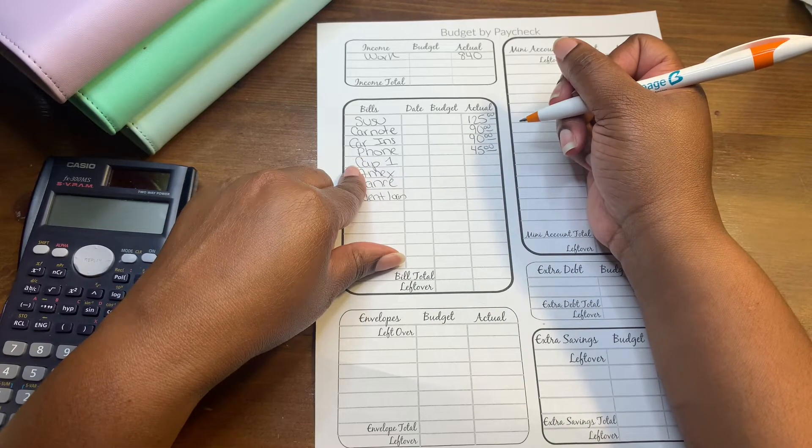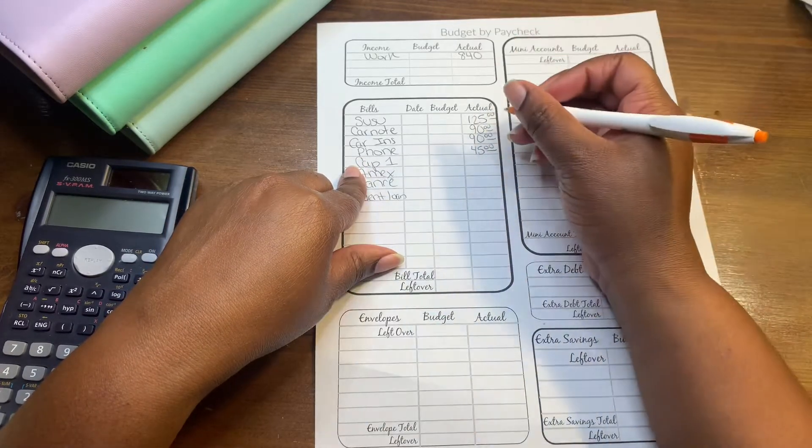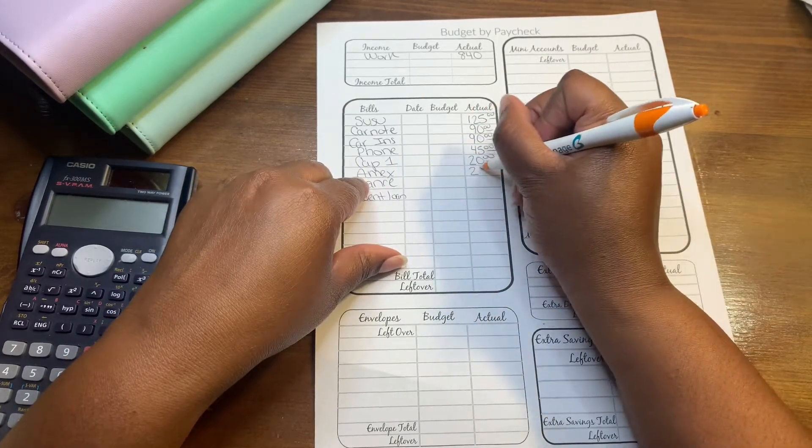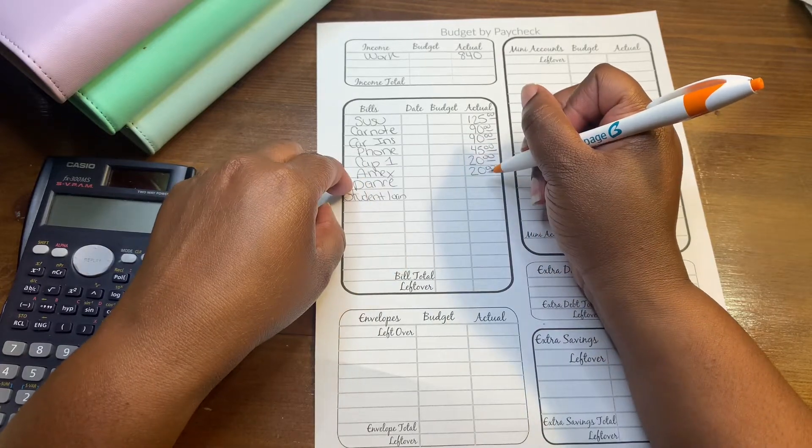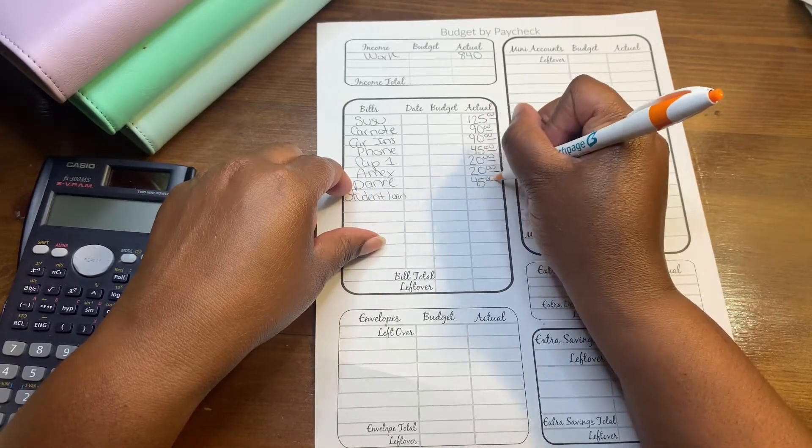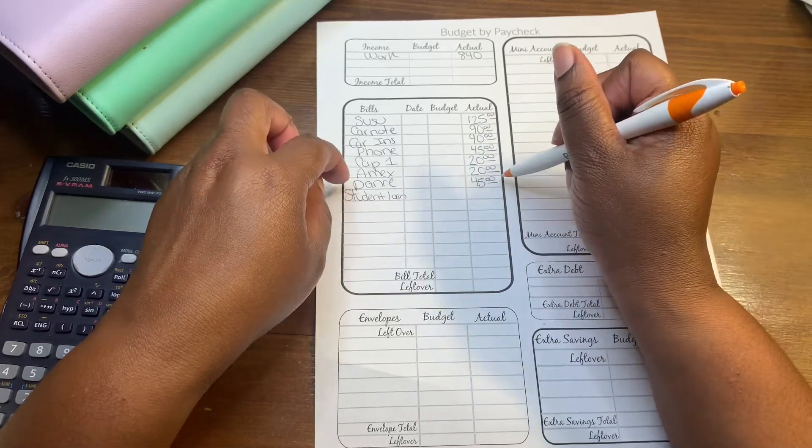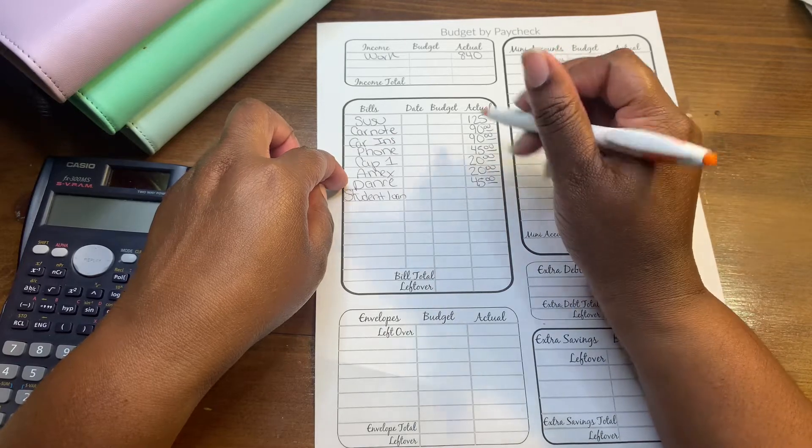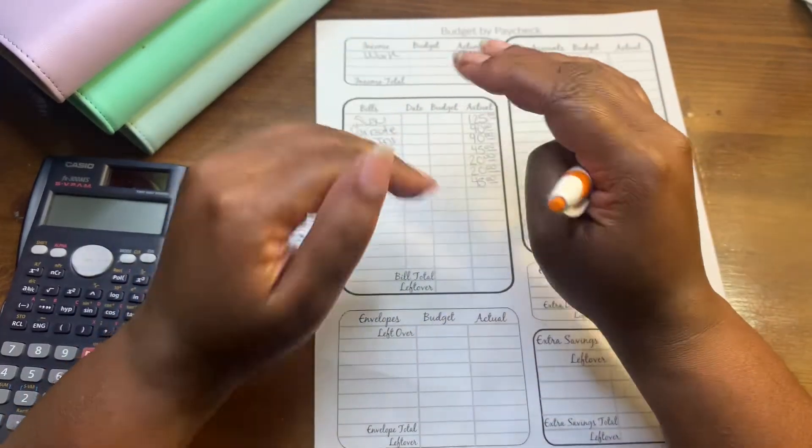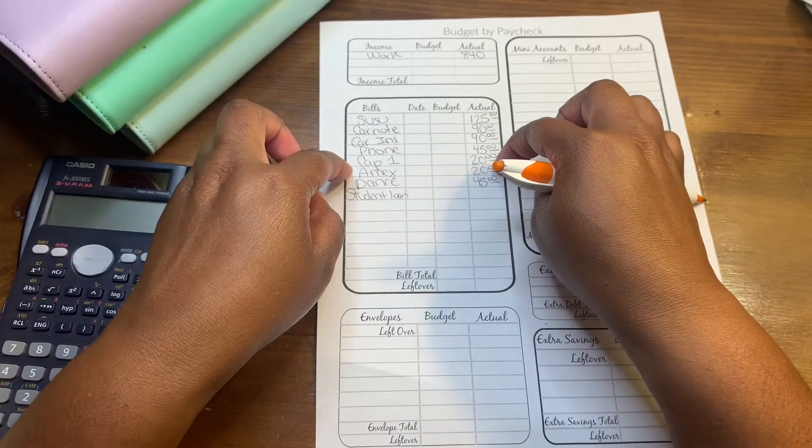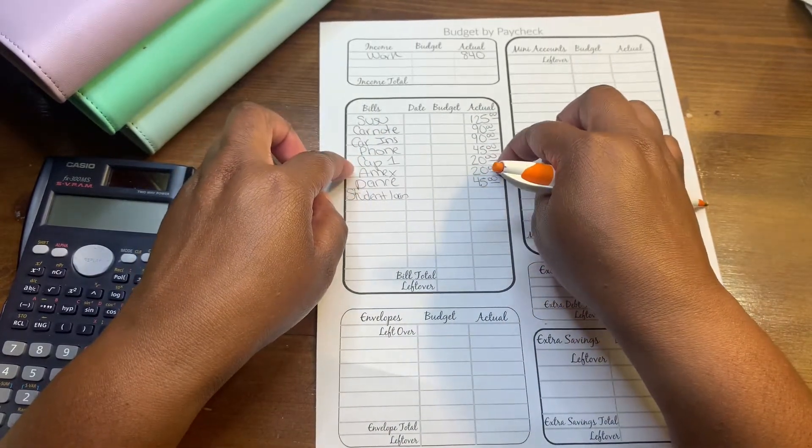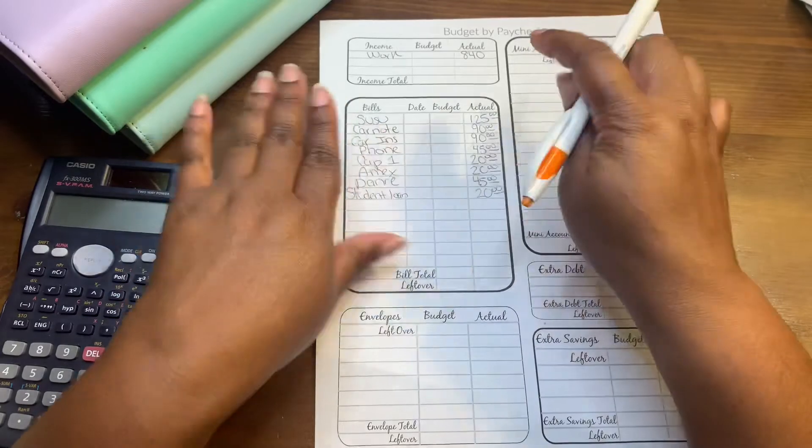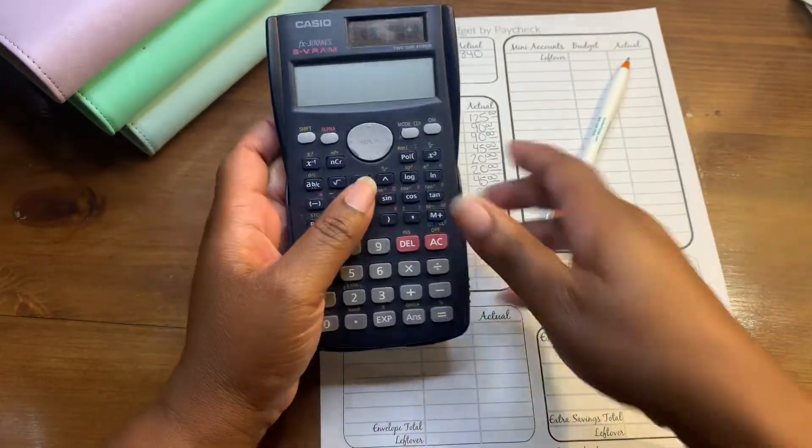The phone bill is also always $45 because I split it into the four weeks in the month. Capital One is only getting $20 and Amex is also only getting $20. Dance is getting $45. I did take out all the money that was in dance because the summer classes automatically comes out of my Amex card, so I took that money to put on the Amex card. Student loan is $20.